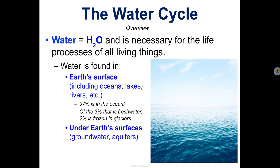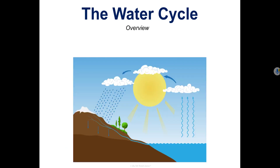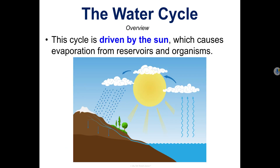There's also water underneath Earth's surface, called groundwater, found in aquifers. There's also water in Earth's atmosphere, and there's water in living organisms like you and me. The water cycle is driven by the sun, which causes evaporation from reservoirs and evaporation from organisms.